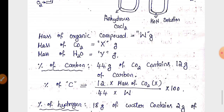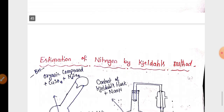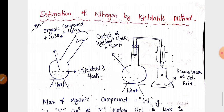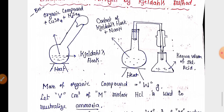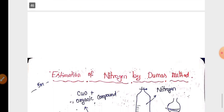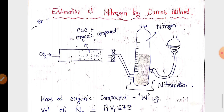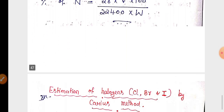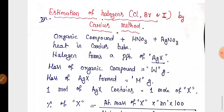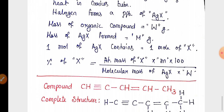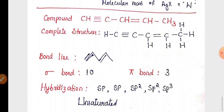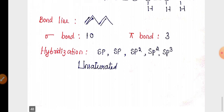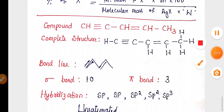For the five-mark question, estimation of carbon and hydrogen by Liebig's method is highly important — along with the diagram, calculation must be written. For estimation of nitrogen, there are two methods: Kjeldahl's method and Dumas method — you need to prepare for five marks with either one. For estimation of halogen, the Carius method is also very important. You may also get questions to write complete structure and bond-line structure, find the number of sigma and pi bonds, identify hybridization, and state whether the compound is saturated or unsaturated.